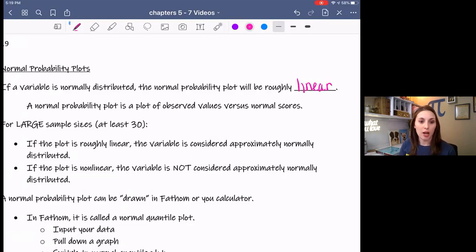A normal probability plot is a plot of observed values or observations versus normal scores which are like z scores.